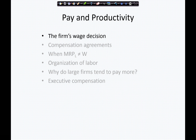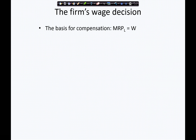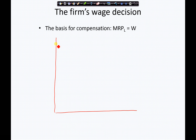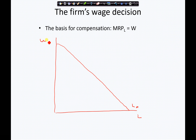First, let's consider the firm's wage decision. The firm's wage decision centers around the concept of marginal revenue product of labor being equal to the wage. We've seen this — in a competitive market, we have some labor demand, and we know that labor demand is going to equal the marginal revenue product of labor. We've seen this several times, but let me just make sure that we're clear on it.